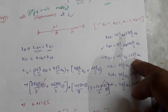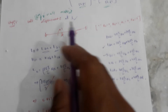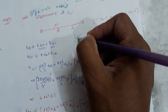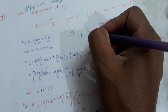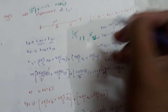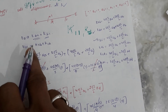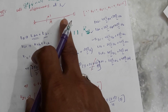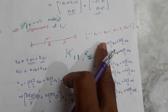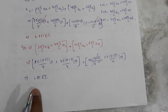K11 equals the sum of stiffness contributions K_BA plus K_BC, giving 5.167 (in appropriate units). K21 equals 1.25. Next, we apply unit displacement at coordinate 2, so only theta C equals 1 and all others are zero. K12 equals K_BA plus K_BC contribution, giving 1.25, and K22 equals K_CB plus K_CD, giving the corresponding value.